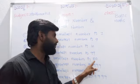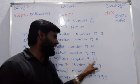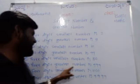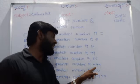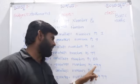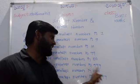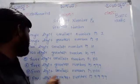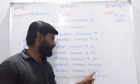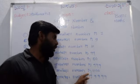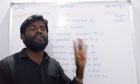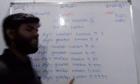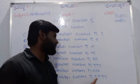Three digit smallest number is 100 — how many digits? One, two, three. Three digit greatest number is 999 — how many digits? One, two, three. Four digit smallest number is 1000. Four digit greatest number is 9999.